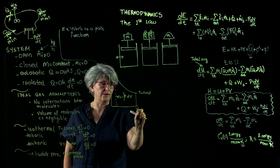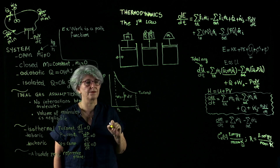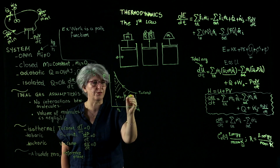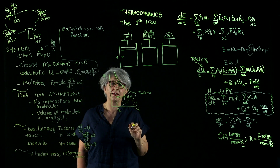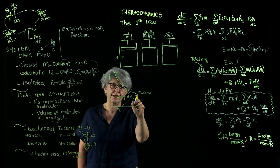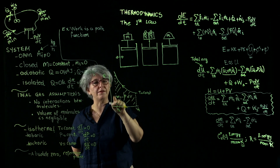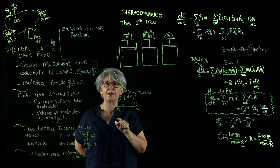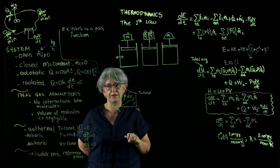The work for an isothermal process is the area under this curve between V1 and V2. The area under the isotherm — the constant temperature curve on the PV diagram — gives us the amount of work obtained, or in the opposing direction, the amount of work done on the system.